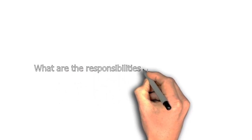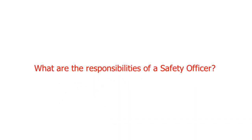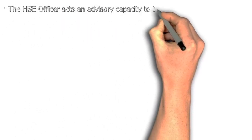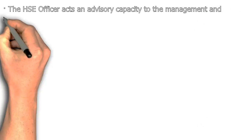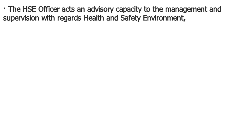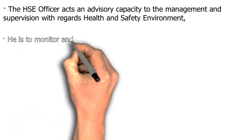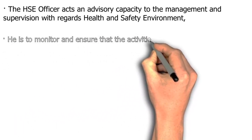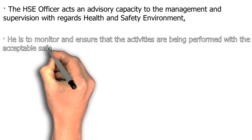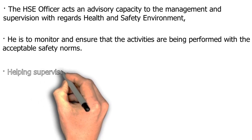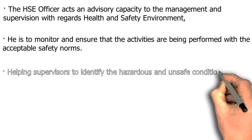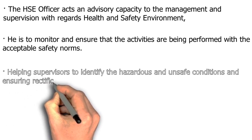What are the responsibilities of a safety officer? The HSE officer acts in an advisory capacity to the management and supervision with regards to health, safety, and environment. He is to monitor and ensure that activities are being performed within acceptable safety norms, helping supervisors to identify hazardous and unsafe conditions and ensuring rectifications.